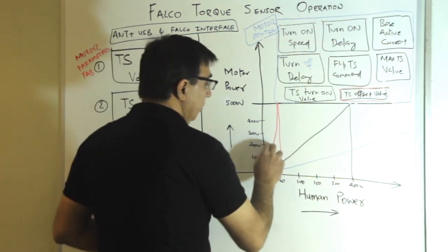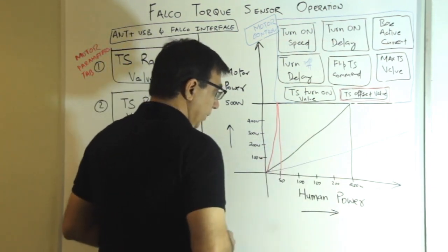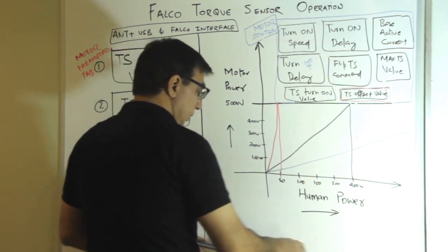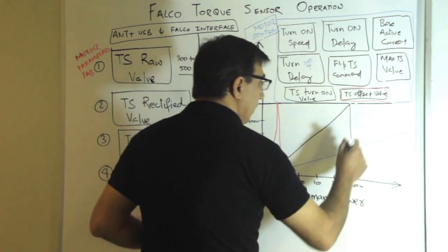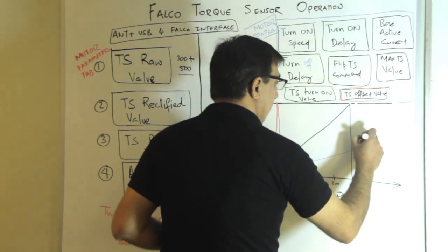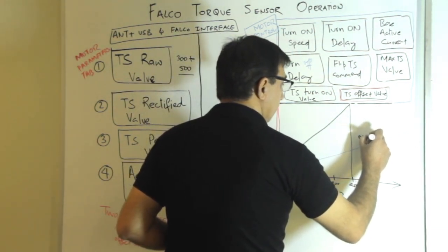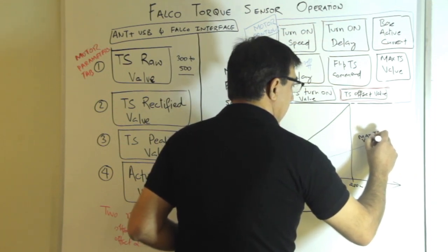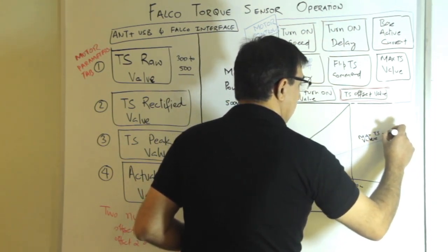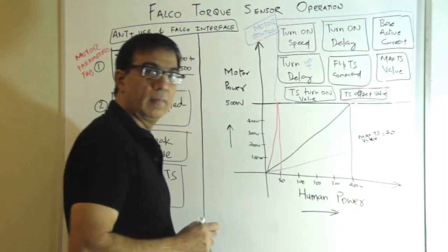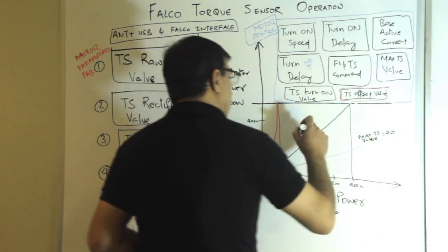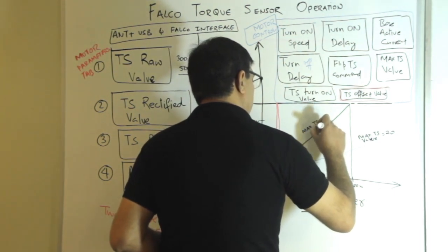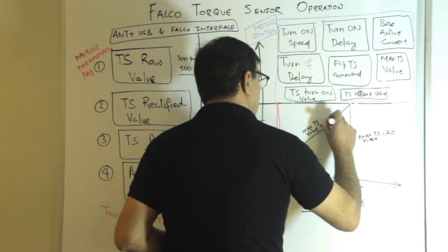Now, how do you manipulate these slopes? The parameter we use is called max TS value. So here, max TS value could be as high as, let's say, 20. Here, max TS value could be around 5.